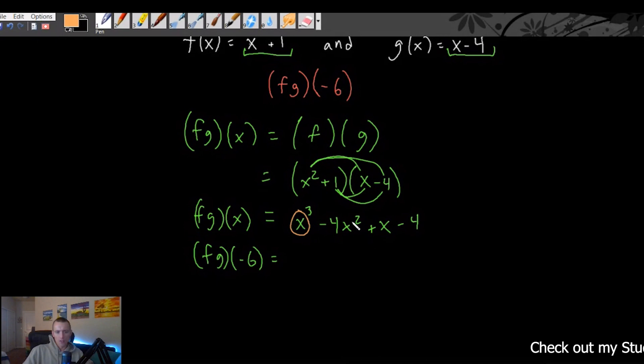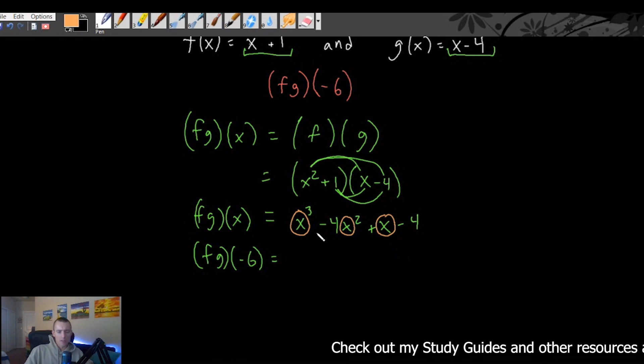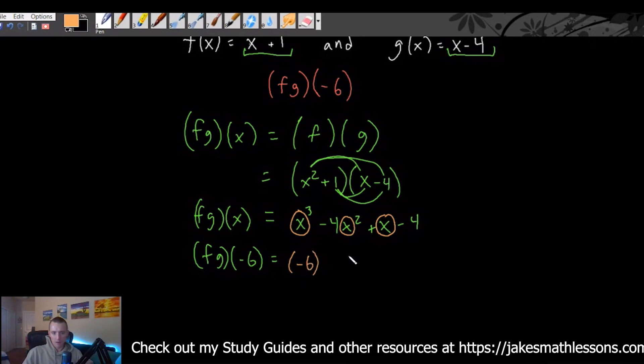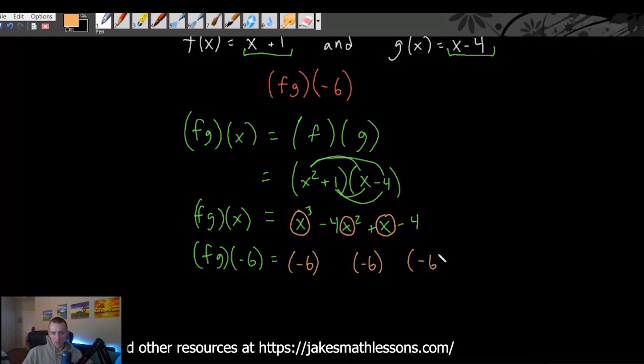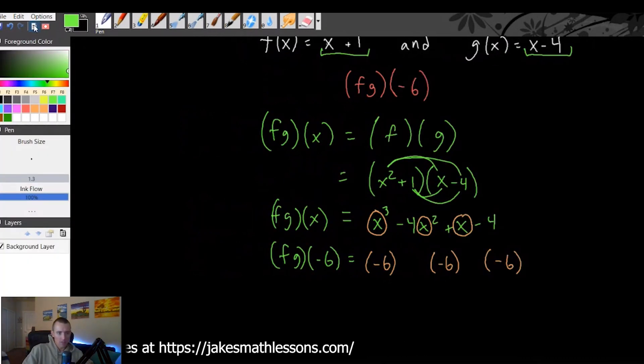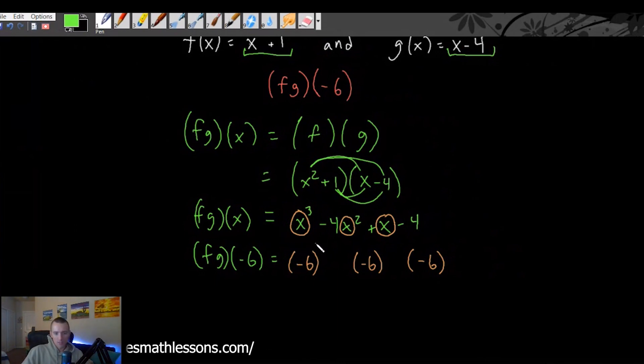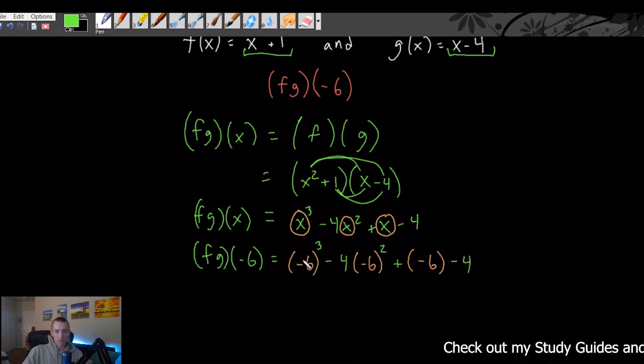So we have an x right there, an x right there, and an x right there. So we're basically just going to take those x's out and replace them with a negative 6 in parentheses. So a negative 6 there. We're going to get a negative 6 for that one and a negative 6 for this one. And then the rest of the parts can just kind of be filled in around it. So it's going to be negative 6 cubed minus 4 times negative 6 squared plus negative 6 minus 4. So literally all we did once we have our f times g of x is take all of our x's out and put in a negative 6.